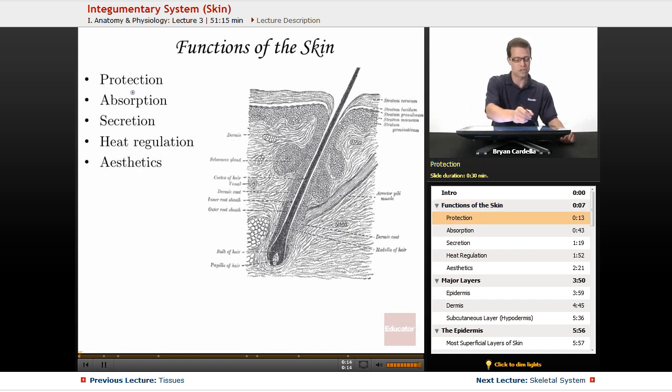Protection. Protection is definitely a major one that we immediately think about. The outside or superficial portion of our integumentary system, the epidermis, is stratified squamous epithelium. It helps protect us. Think about all the bacteria and viruses, fungi, etc., that would quickly get into our body if it wasn't for this outside protective layer. So it's one of those first lines of defense in protecting our body from foreign pathogens or invaders.